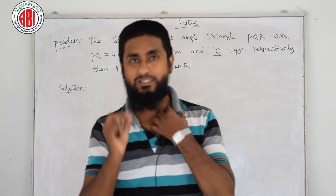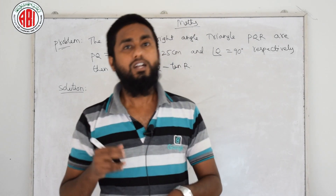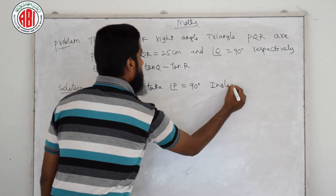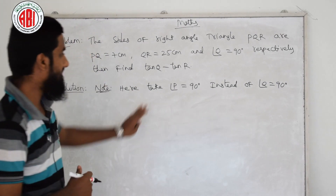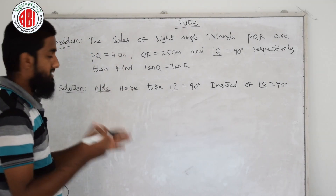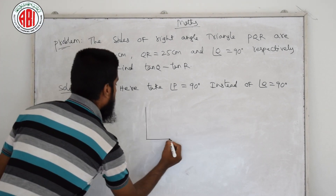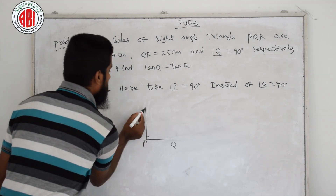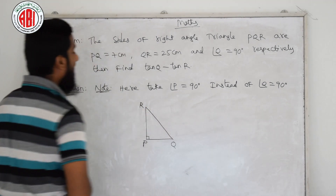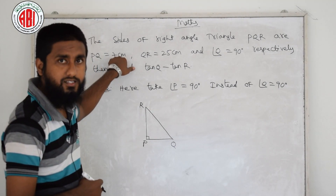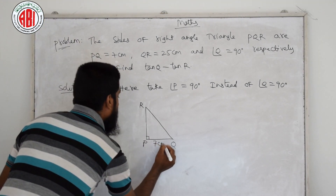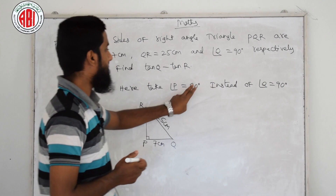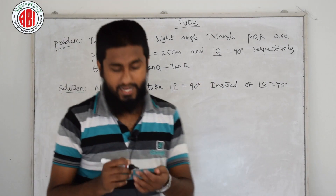Students, remember: there is a small error in the textbook question. Instead of angle Q, we need to take angle P equals 90 degrees. This is an error in your textbook question. Now I am drawing the triangle. Here is P, next is Q, and joining the line gives us R. PQ equals 7 centimeters, QR equals 25 centimeters, and we take angle P equals 90 degrees. Find tan Q minus tan R.